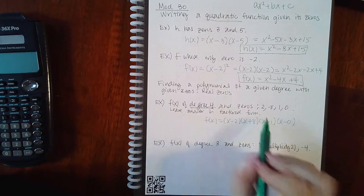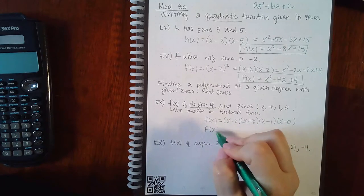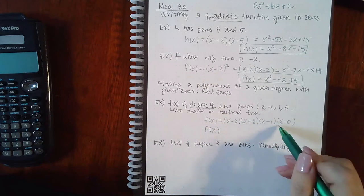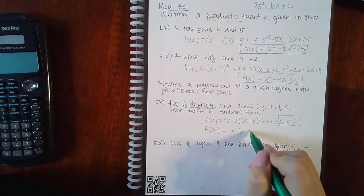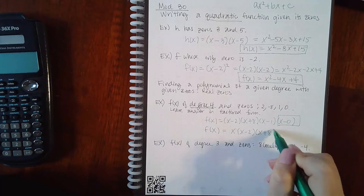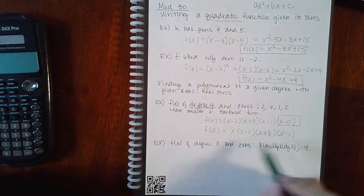They say leave your answer in factored form, so they don't expect you to multiply it out. This one can be written just as x. Leave the rest. I don't think it'll get you wrong if you leave it as x minus 0, but more formally they just use x.